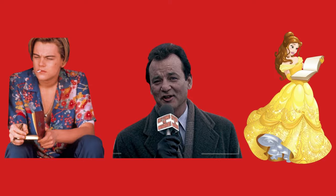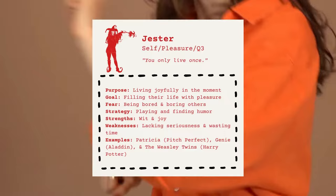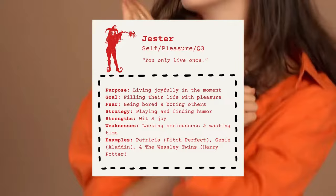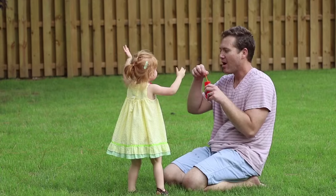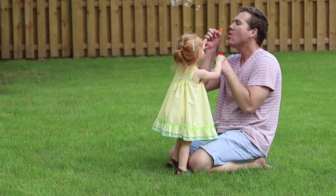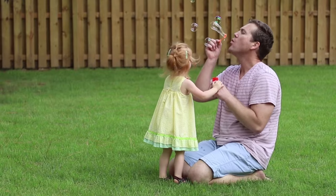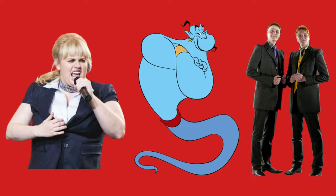The jester is a self-type archetype that believes pleasure is the path towards a sense of belonging in the world. Their purpose is to live joyfully in the moment. These characters fill their life with pleasure and fear becoming bored or boring others. To avoid this, they often choose play over working on the task at hand and find humor in everyday parts of life. They are quite witty and full of joy, but lack seriousness and often waste time. Famous jester characters include Genie and the Weasley twins.